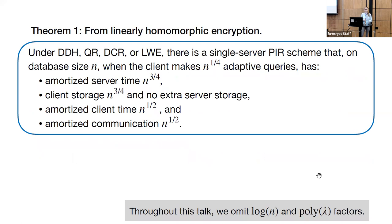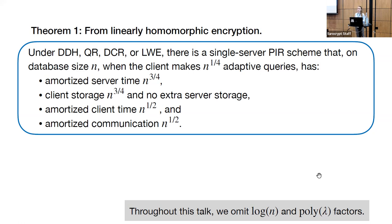The first result we get is that assumptions implying linearly homomorphic encryption are enough to build PIR with sublinear amortized time. Specifically, under the Decision Diffie-Hellman, quadratic residuosity, decision composite residuosity, or Learning With Errors assumptions, we can build a single server PIR scheme such that on database size n, if our client makes at least n^{1/4} adaptive queries, our server runs in amortized time n^{3/4}, our client has extra storage n^{3/4}, and the server has no extra storage. Throughout this talk, I hide factors logarithmic in the database size and polynomial in the security parameter.